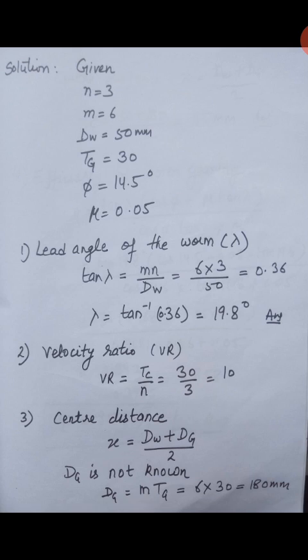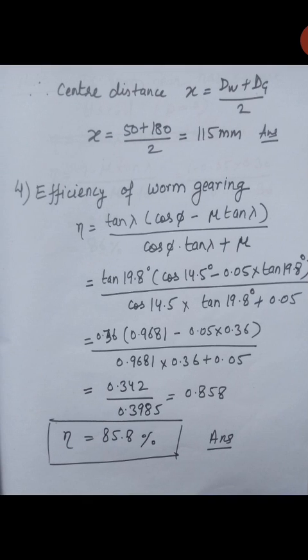Next, we calculate center distance, which is given by (dw plus dg) upon 2. dw is 50 mm, but dg is not yet known. The pitch circle diameter of the gear dg equals m times Tg, where module is 6 and Tg is 30, giving dg equal to 180 mm. So center distance equals (50 plus 180) divided by 2, which is 115 mm.